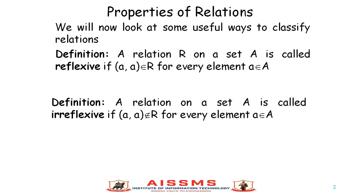The first property of relation is reflexive. A relation R on set A is called reflexive if (A, A) belongs to R for every element A that belongs to set A. So a relation on set A will be reflexive if for every element of set A, (A, A) belongs to R. A relation on set A is called irreflexive if the ordered pair (A, A) does not belong to R for every element A belonging to A.